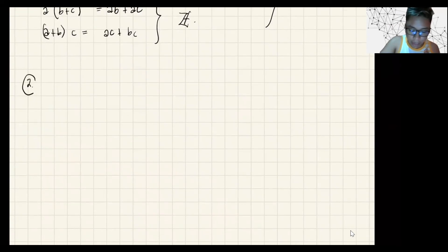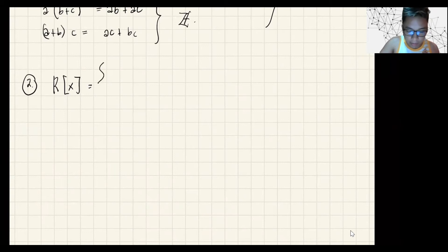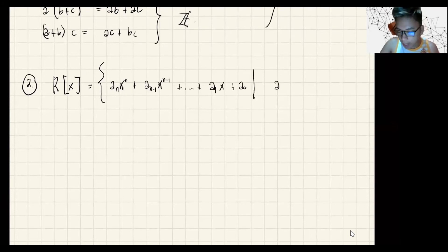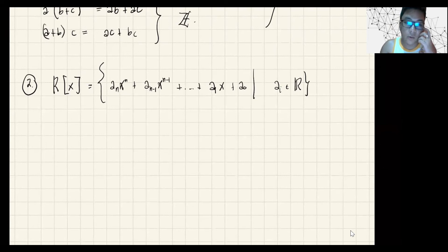Let's consider another example. We have R[x] defined as the set of polynomials of the form a_n·x^n plus a_{n-1}·x^{n-1} plus up to a_1·x plus a_0, such that each coefficient a_i is in R. This is called a real polynomial ring.